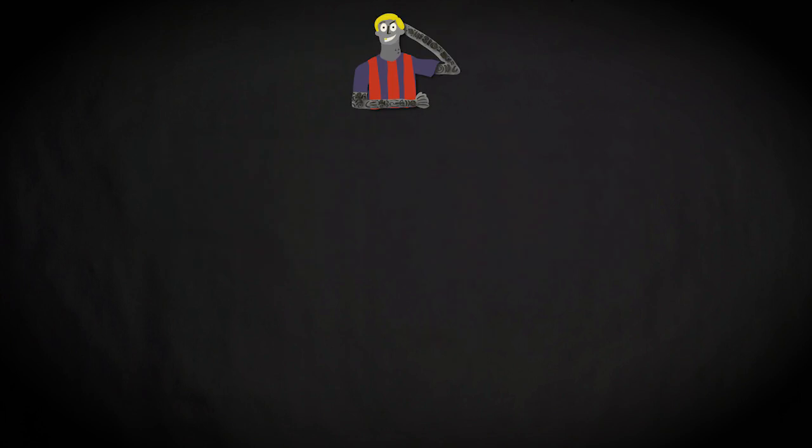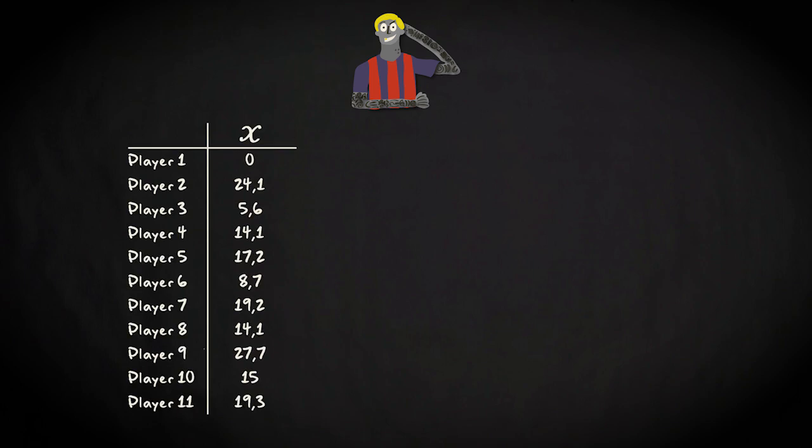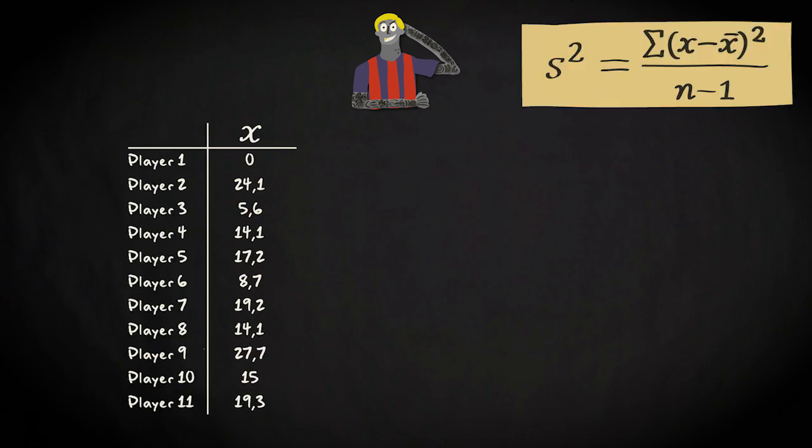Let's now apply the formula to our tattoo density example to see how it works in practice. These are the team 2 data, and this is the formula. The first step is to compute the mean. I won't do that now, because I assume that you already know how to do that. The mean of these values equals 15.